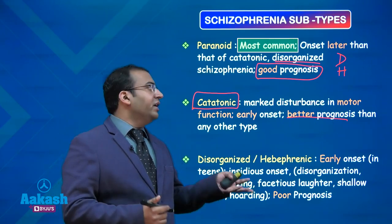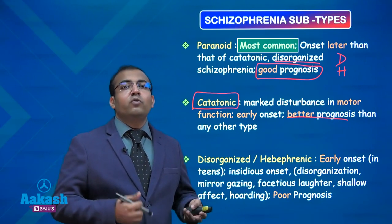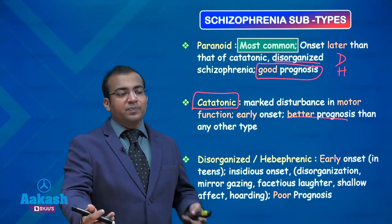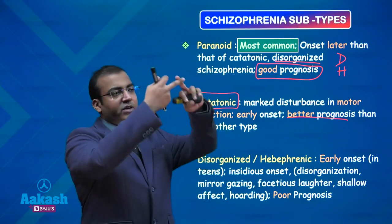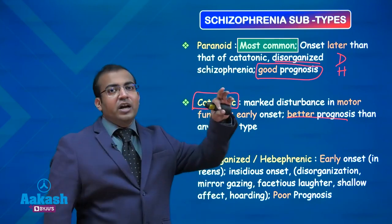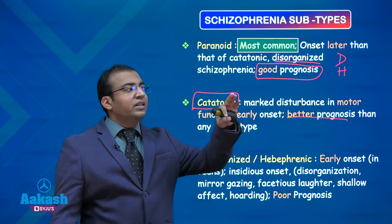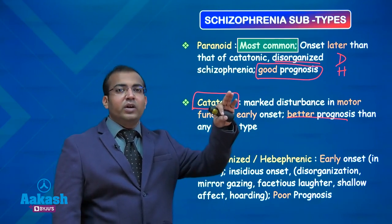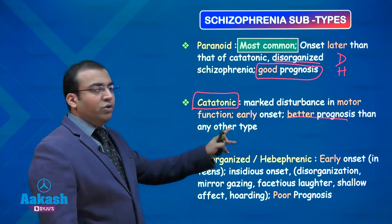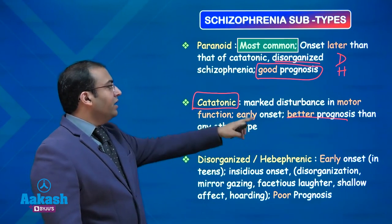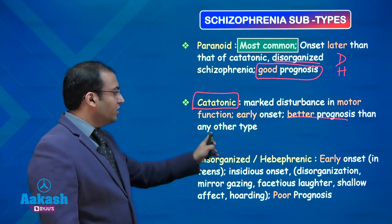There are phenomena like Mitgehen and Mitmachen, wherein the patient will have an extreme form of cooperation towards the examiner — by the touch of a finger and minimal effort, you can make that person attain any posture, which will remain maintained for quite a long time. In summary, predominance of motor symptoms with early onset and a better prognosis defines catatonic schizophrenia.